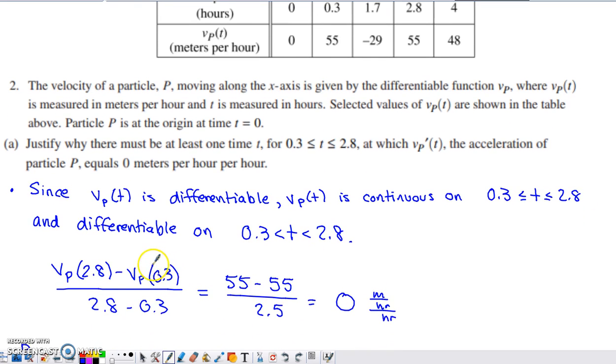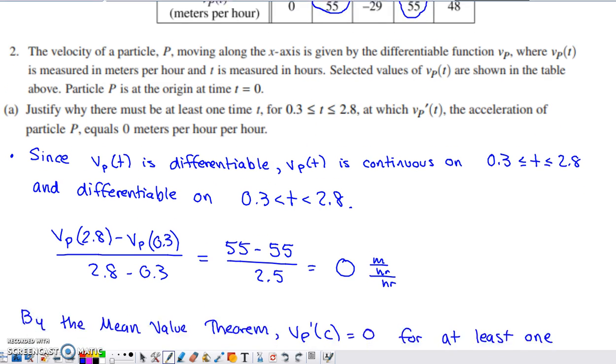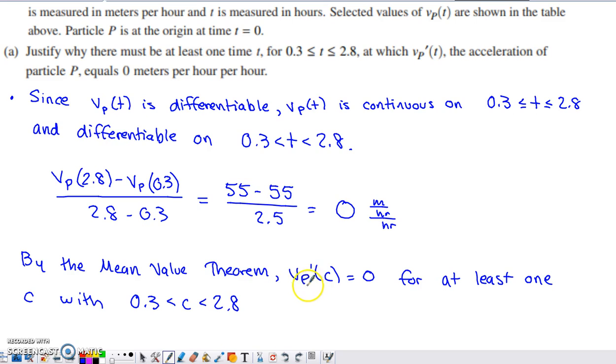The conclusion of the theorem says that your average rate of change, which is just a regular old slope calculation applied to the function that you're dealing with, so a slope calculation with the velocity values at 2.8 and 0.3, is going to end up giving me a value of 0, because the function values at each of those times are equal to each other. Units are meters per hour per hour, so that matches up with the units of acceleration specified within part A. By the mean value theorem, V prime of C, the acceleration of particle P, has to equal 0 at least once for some C in between 0.3 and 2.8.